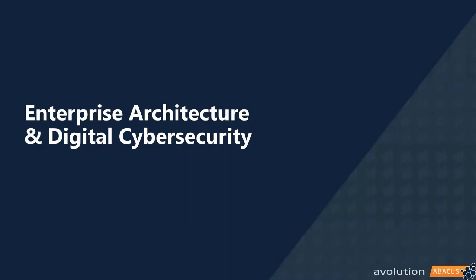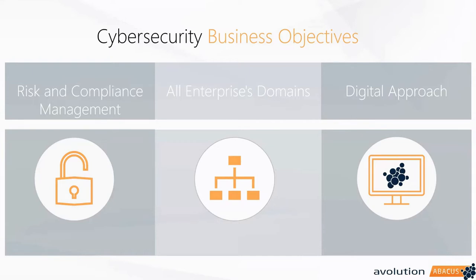The main thing we're going to address in cyber security is managing risk and compliance. If I want to list one main objective for doing cyber security, it's risk and compliance. But the key point is that we can't address or manage risk and compliance without looking at the enterprise as a whole body — we need to consider all aspects of the enterprise to achieve that goal.